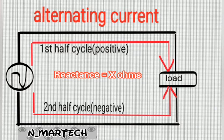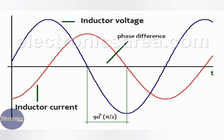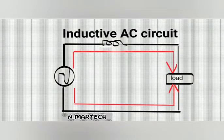Reactance is also expressed in ohms and represented with the letter X. In an inductive circuit, voltage leads current — this means that voltage reaches the peak value before current. Current flow through the inductor coil creates a magnetic field around the coil.